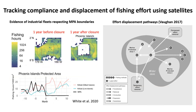Another example is the Phoenix Islands, showing fishing effort one year before closure and then one year after closure — demonstrating high compliance with the MPA closure. However, the graph below shows that fishing effort continued to increase, raising the question of where that displacement went. A diagram from another paper shows the various potential pathways in response to closures: some may spill into adjacent protected areas, some may be temporary effort removal from the fleet, or displacement to outside areas.